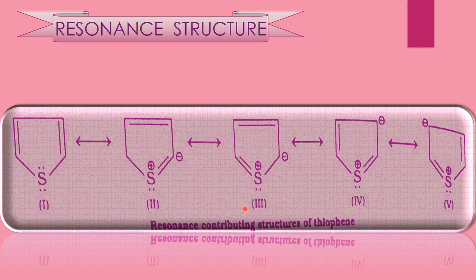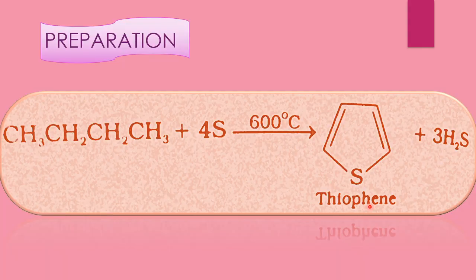Resonance structure means the delocalization of the pi-electrons within a ring, and this type of structure you have to write. I have already explained the resonance structure of furan and pyrrole. This is the resonance structure for thiophene. You have to write these stabilizing resonance structures.